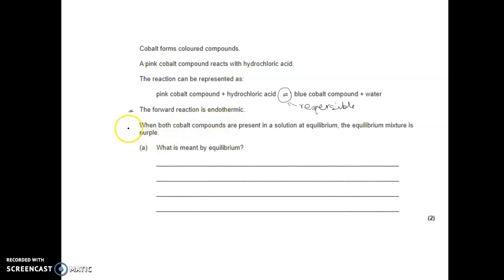In this particular question, this statement is interesting. When both cobalt compounds are present in a solution at equilibrium, the equilibrium mixture is purple. We know that the reaction was carried out. That's pink, that's blue. Why did it look purple?